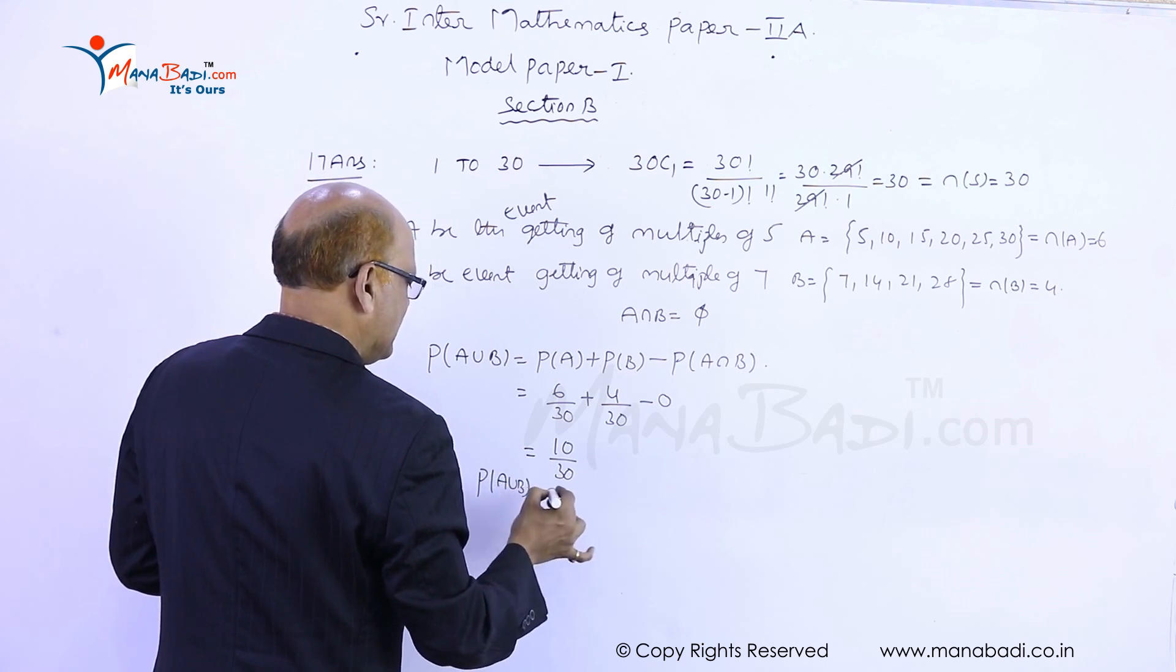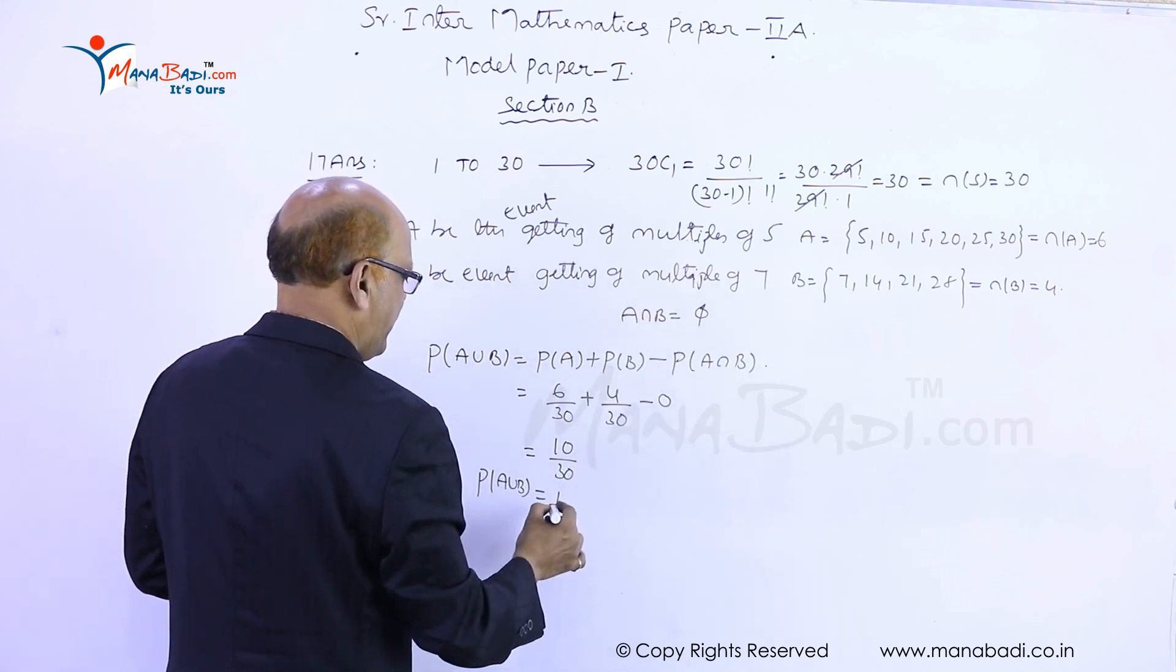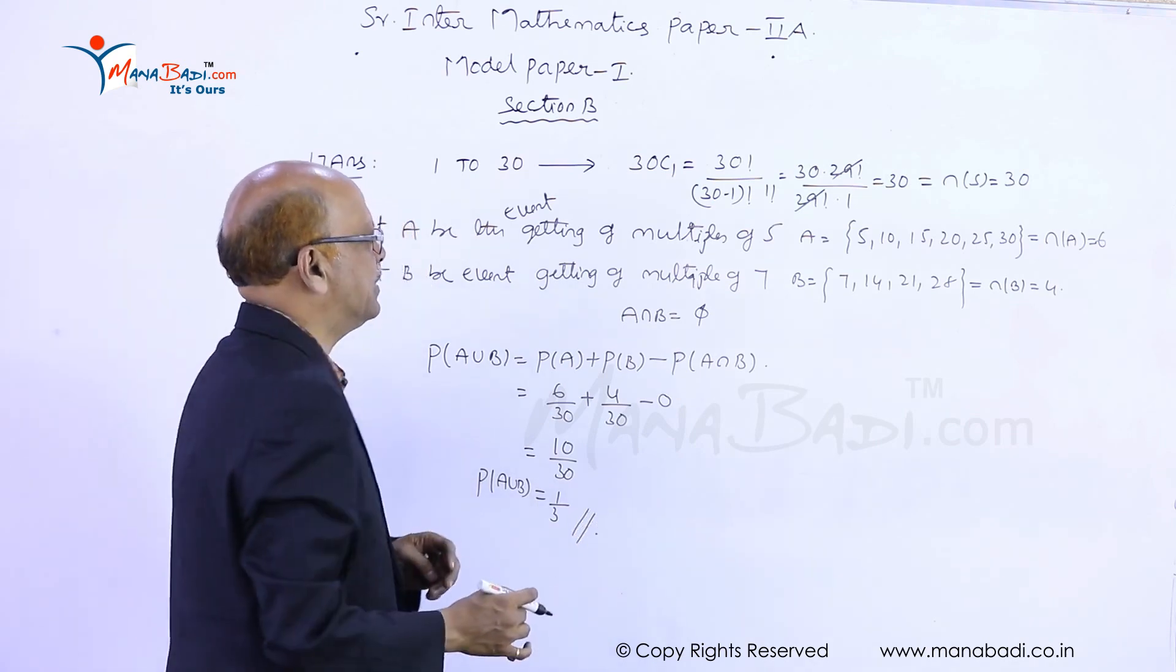Probability of multiple of 5 or 7 is 1 by 3. That's all, that is the answer.